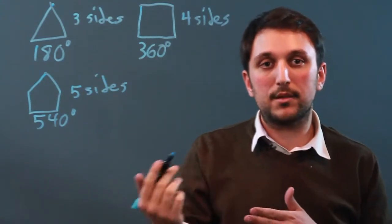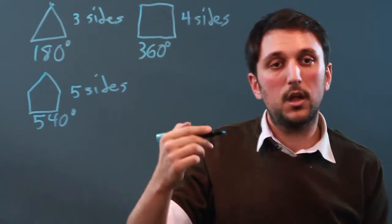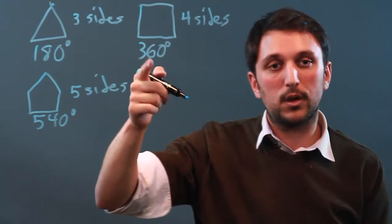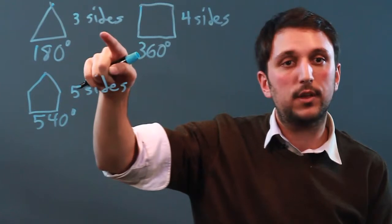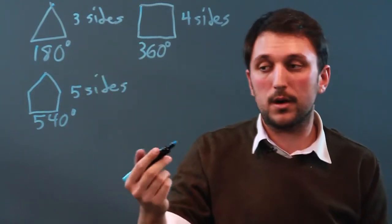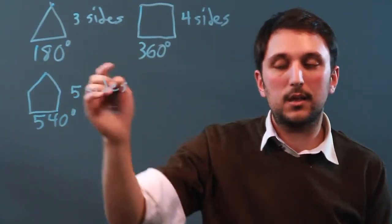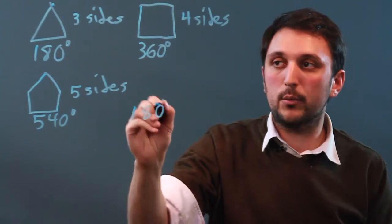Where algebra makes this easier is there's a formula that will give you the interior degrees of any polygon when you call the number of sides n. That's your variable. We start with 180, and we'll always be adding 180 each time.